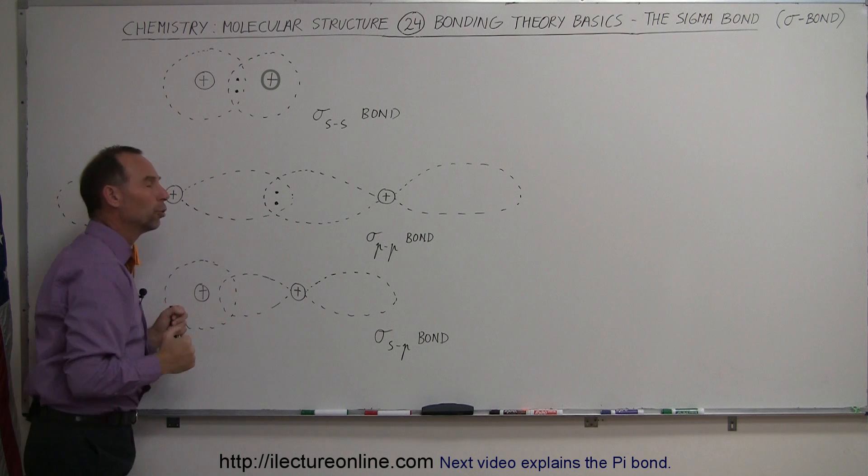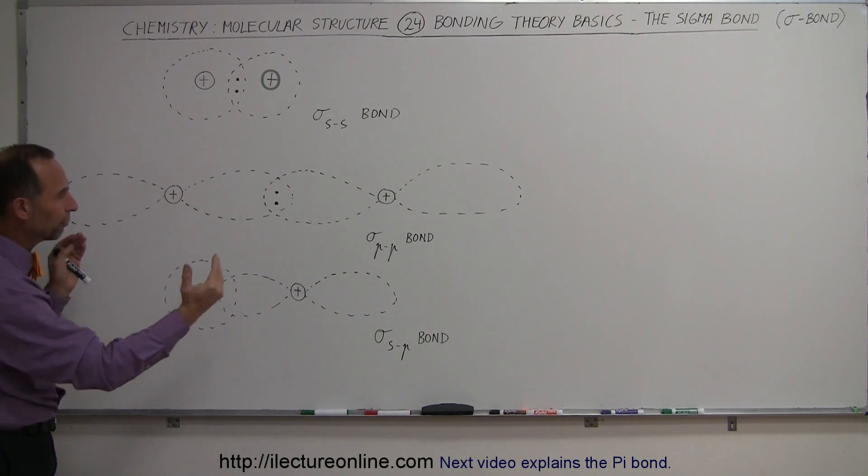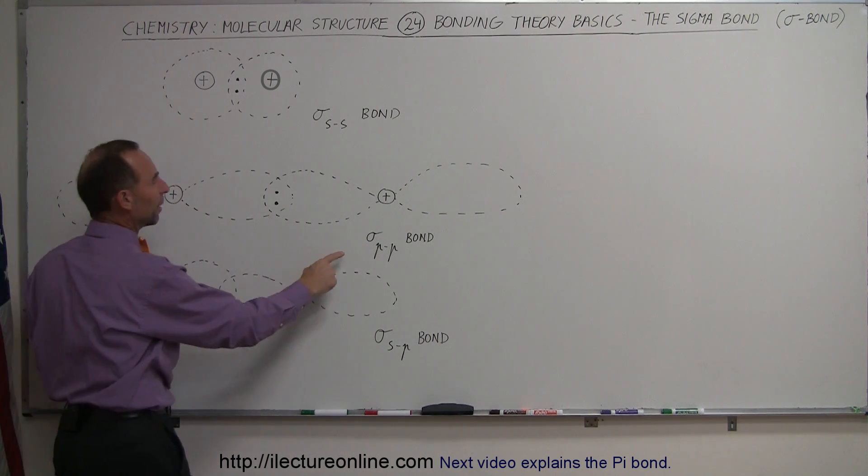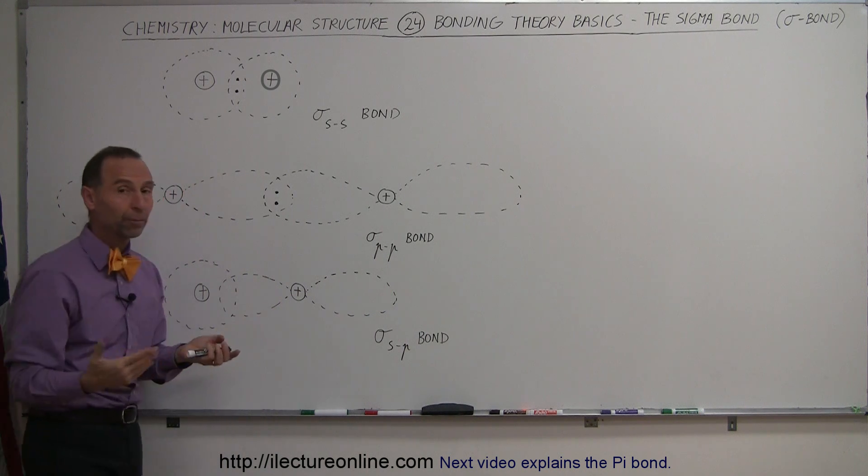Therefore, again, pulling the two nuclei, the two positive nuclei together, forming a bond. And so that's called the sigma-pp bond because that was formed by two p orbitals.